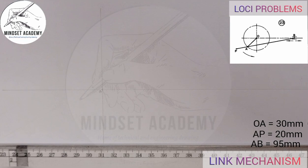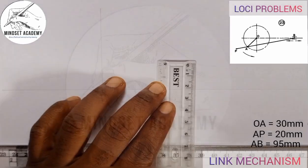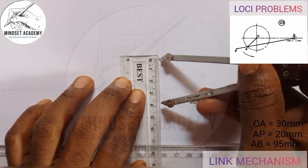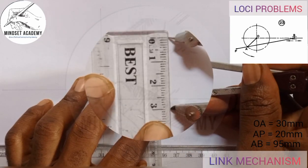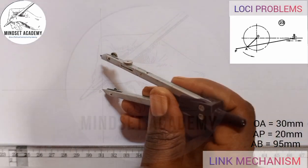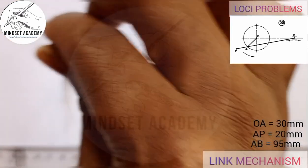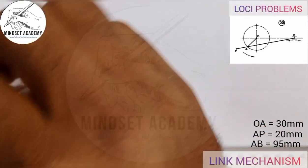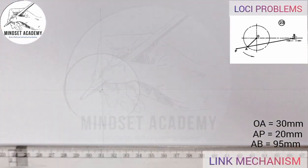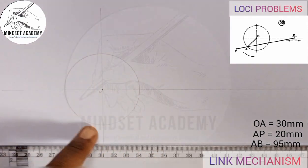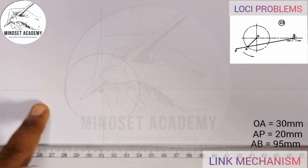The radius of the crank OA is given to be 30mm. I'm going to measure 30mm — from 0 to 3 is 30 — and place it at center O. Then I'll draw my crank and thicken it. That is my crank. When we have O, we need A, which falls along the circumference of this circle.